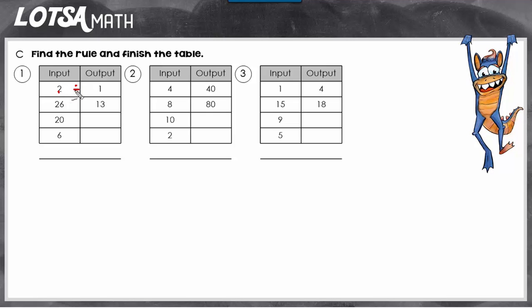So 2 divided by what is 1? 2 divided by 2 is 1. And it would also work: 26 divided by 2 is 13. So the rule is divided by 2. That is what's happening to the input to create the output.